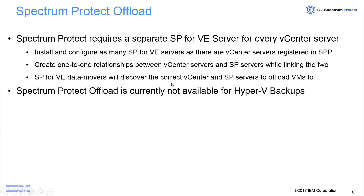Spectrum Protect requires a separate Spectrum Protect for Virtual Environment server for every vCenter server. You'll need to install and configure as many Spectrum Protect for VE servers as there are vCenter servers registered to the Spectrum Protect Plus environment, creating a one-to-one relationship between vCenter servers and Spectrum Protect servers. The data movers will discover the correct vCenter and Spectrum Protect servers for offloading VM backups. Note that Spectrum Protect offload is currently only available for VMware images, not Hyper-V backups.